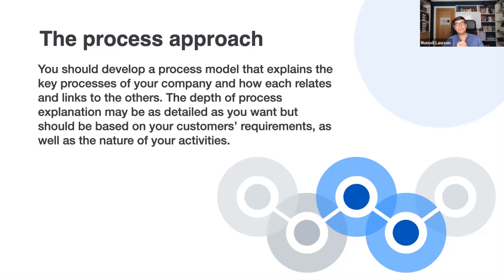ISO 9001 says you must determine the processes needed for your QMS and how they're applied throughout your business. You must firstly determine the inputs required — what facilities, equipment, personnel, and controls you need — and the outputs expected, such as a finished product or service. Then you need to determine the sequence and interaction of processes — which parts must come before or after others — and then determine and apply the criteria and methods of control: how these processes are monitored, measured, and whether you're using key performance indicators.